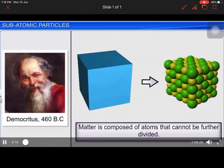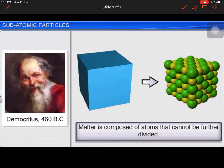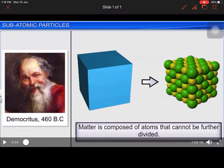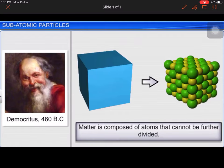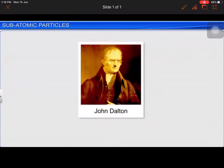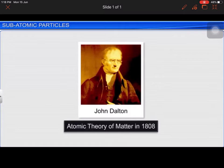This idea was proposed by the Greek philosopher Democritus back in 460 BC. Matter is composed of atoms that cannot be further divided. However, due to the lack of scientific evidence, Democritus' ideas were considered mere speculations and ignored for 2,000 years until John Dalton proposed the atomic theory of matter in 1808.